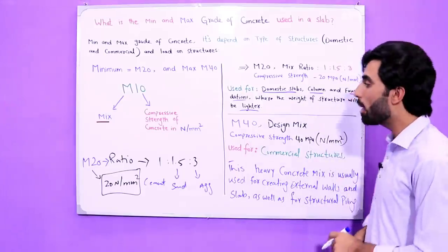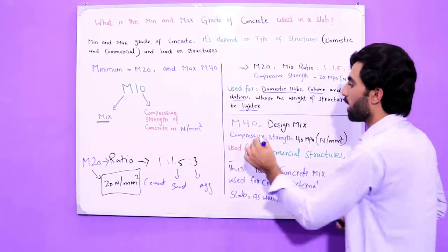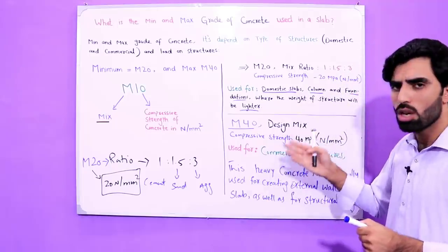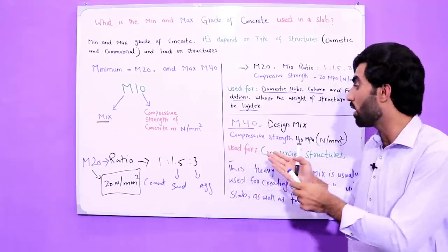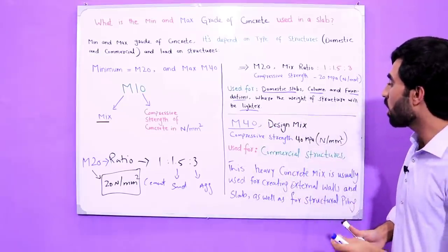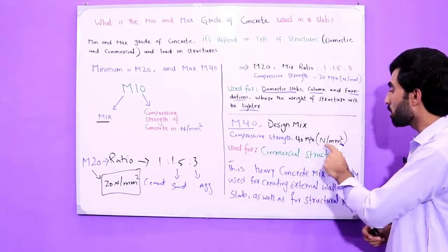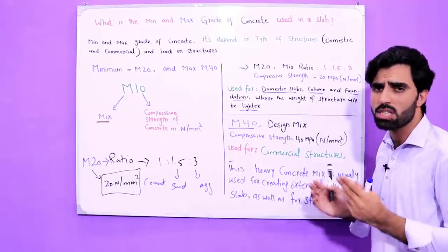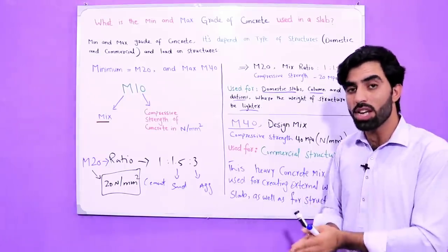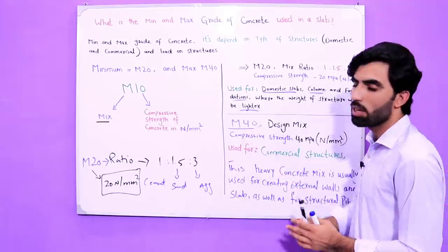Now coming to M40, which is also used for RCC slabs. The ratio for M40 is a design mix — we can't use a standard ratio, so it requires a specially designed mix. The compressive strength of M40 is 40 Mega Pascal, meaning 40 Newton per mm squared, achieved after 28 days.